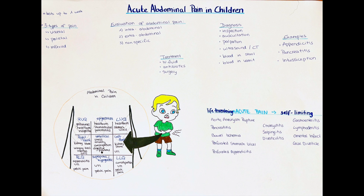Acute abdominal pain can be classified by the systems affected. The first category is intra-abdominal pain arising from the abdominal cavity or retroperitoneum. This includes gastroenterological diseases such as appendicitis and diverticulitis, genitourinary diseases such as renal colic, pyelonephrosis and nephrolithiasis, gynecological diseases such as acute pelvic inflammatory disease and ectopic pregnancy, and vascular diseases such as acute abdominal aneurysm and mesenteric ischemia.